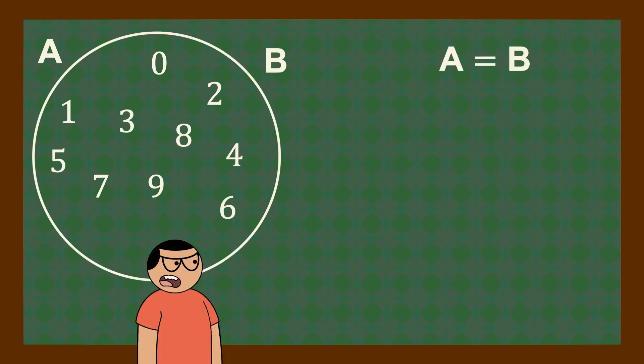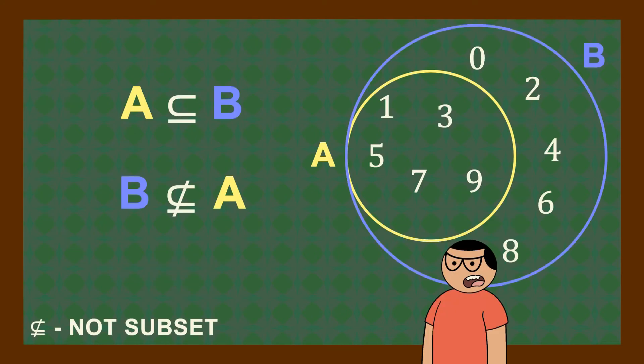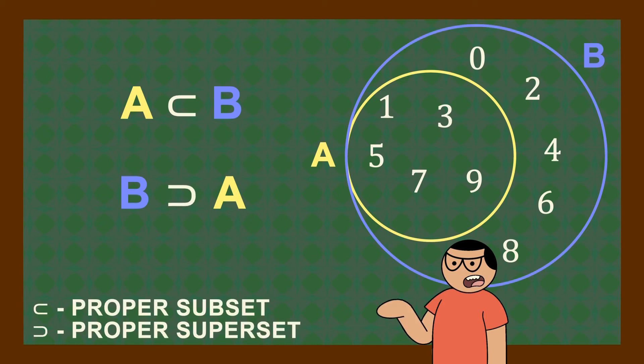Or, if A is equal to B and A is a subset of A, by substitution, A is a subset of B and B is a subset of A. However, if A is a subset of B but B is not a subset of A, then all the objects in A are the objects in B, but not all objects in B are objects in A. If that is the case, then A is a proper subset of B or B is a proper superset of A.